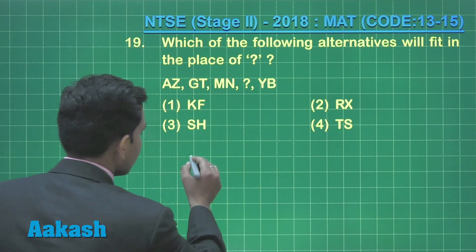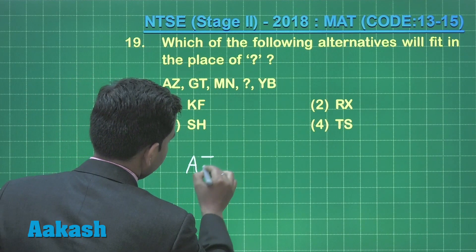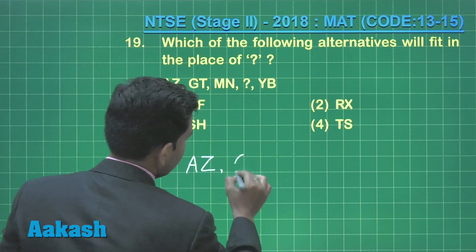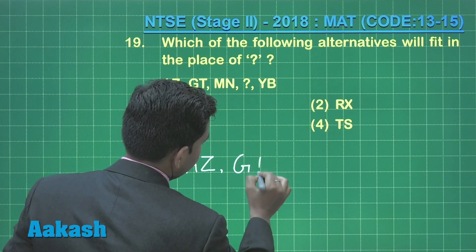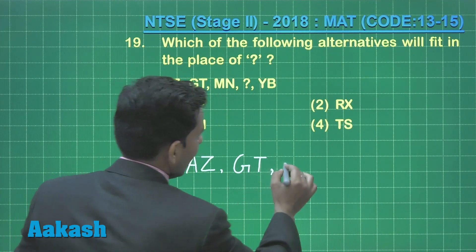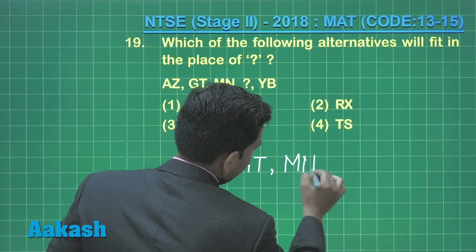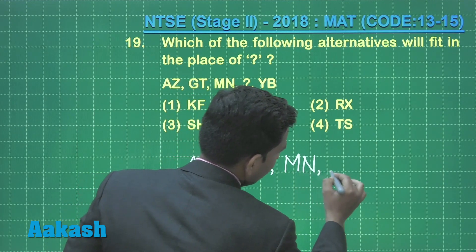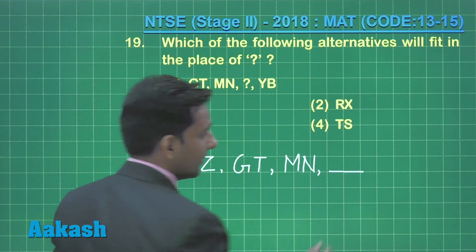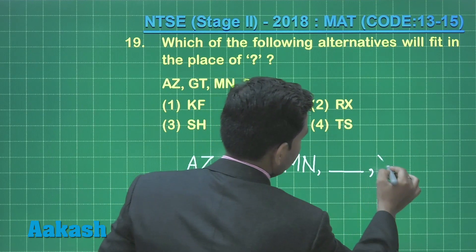The terms of the given sequence are: az, then gt, then mn. The fourth term is missing, which we have to determine. The next term is yb.